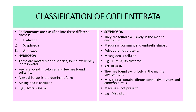The third class, Anthozoa, is found exclusively in the marine environment. Mesoglia contains fibrous connective tissue and amoeboid cells, and medusa are not present. Example: Metridium. In this way, the three classes formed in Cnidaria are Hydrozoa, Scyphozoa, and Anthozoa.